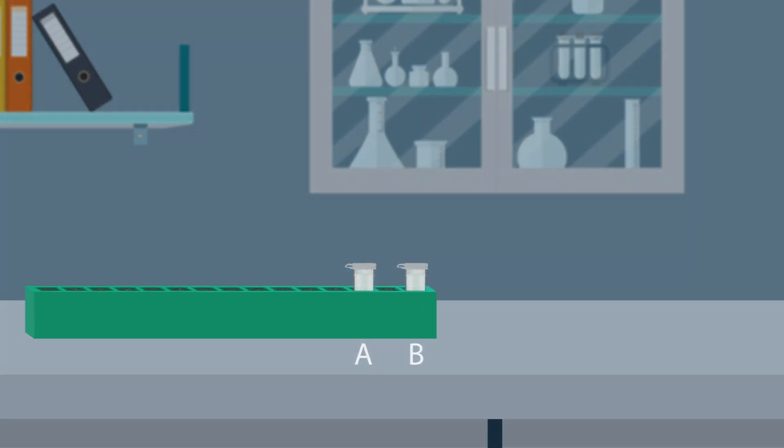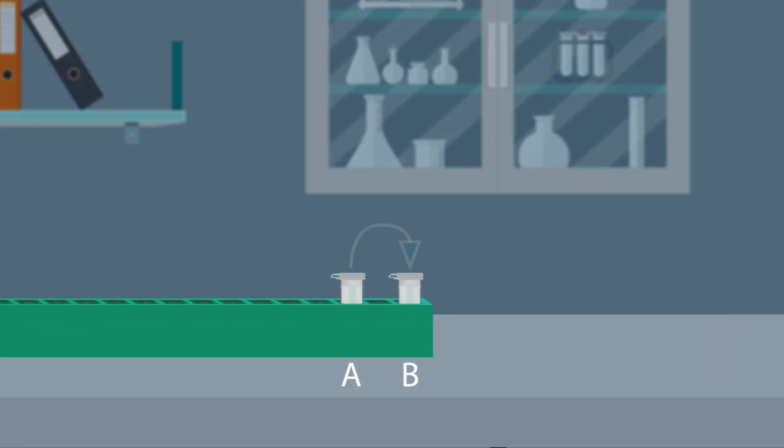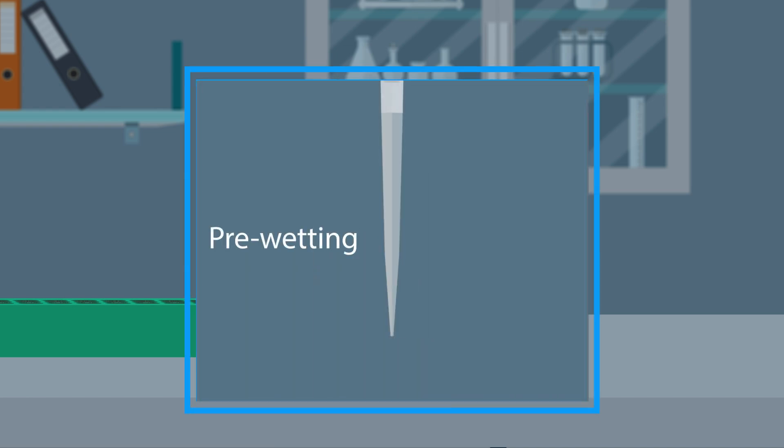Before we transfer buffer A into buffer B, it is recommended that the pipet tip be pre-wet. Pre-wetting is a technique that improves pipetting accuracy by balancing the environment between the tip's air column and the liquid to be transferred. This can be achieved by aspirating and dispensing the liquid to be moved three times.